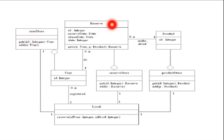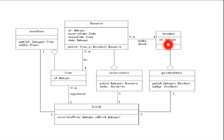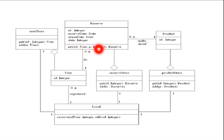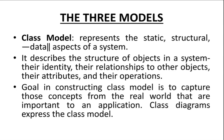The next class is 'Reserve' — to reserve the product. A user can reserve the product. The attributes include a product ID to identify the product, and a reserve date because you have to reserve the product for a particular date. The operation is adding the new product for the particular user. Another class is 'Product Store.' You can add a product or get the details of the product.